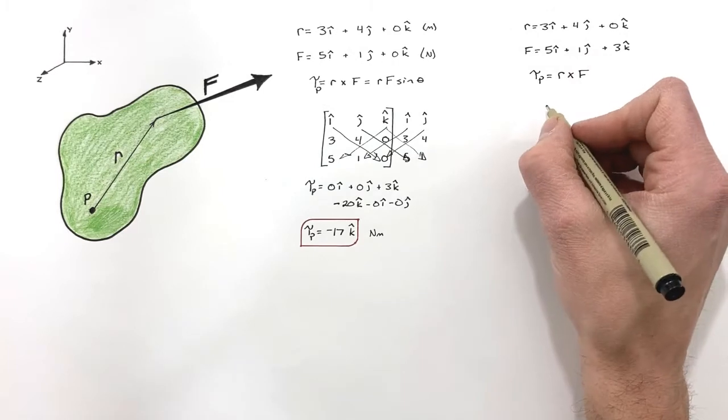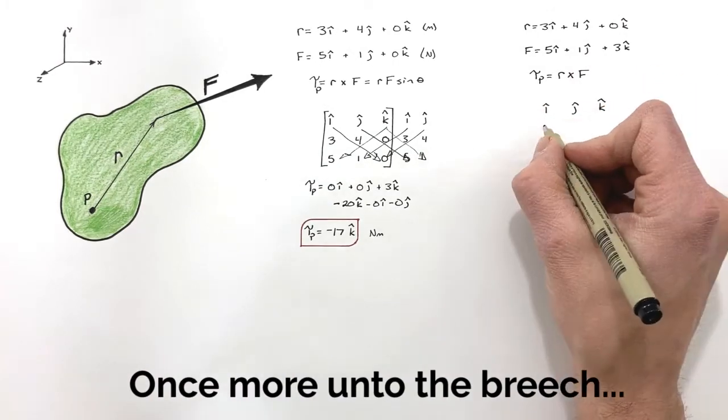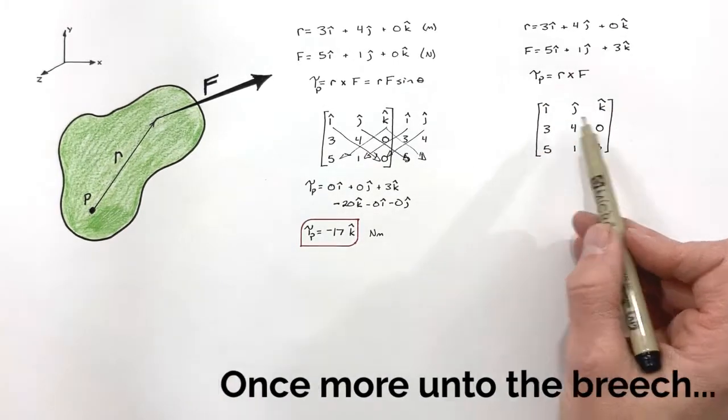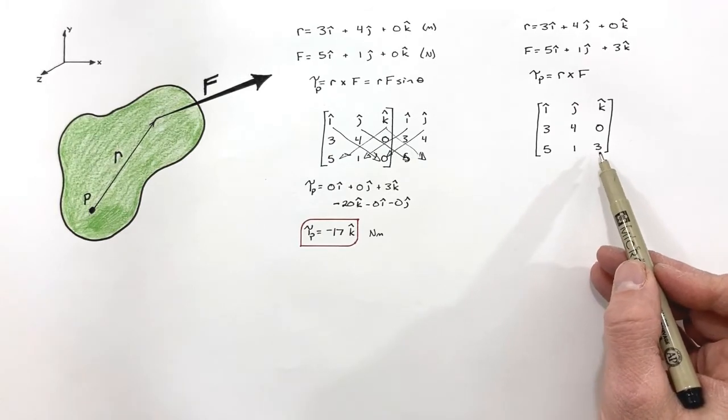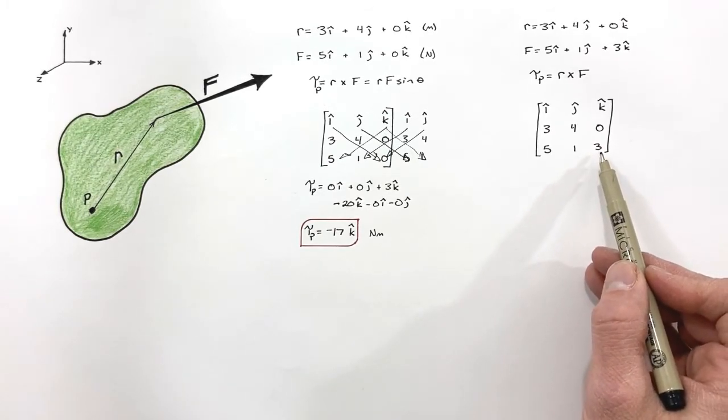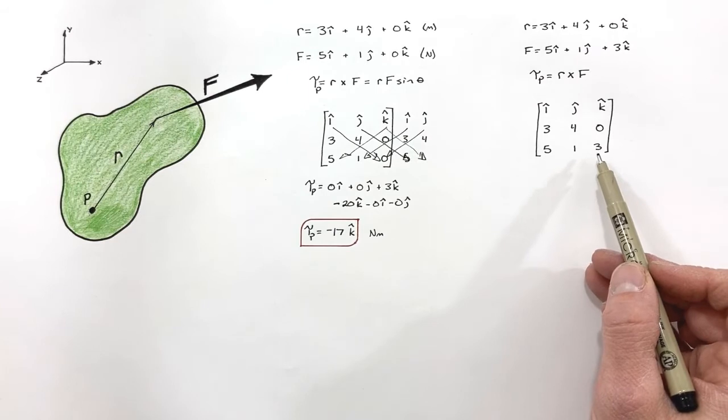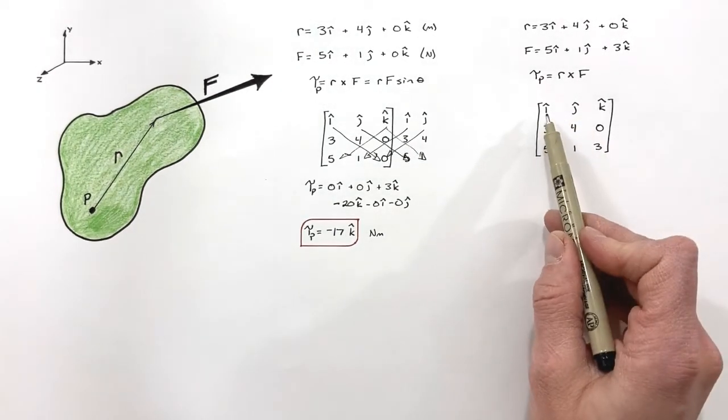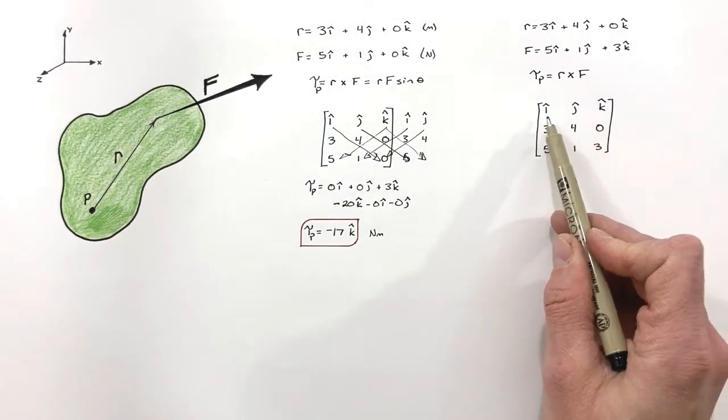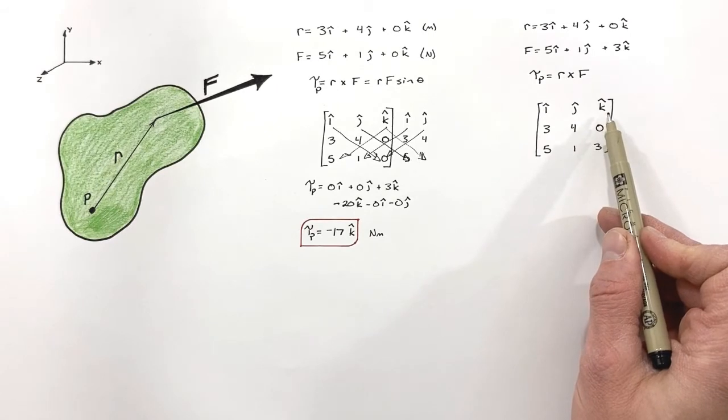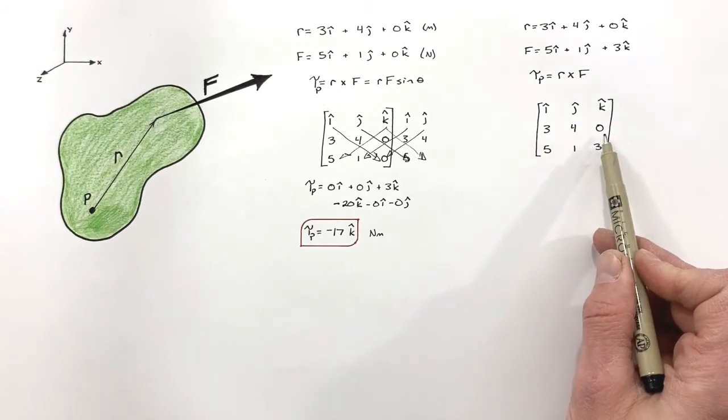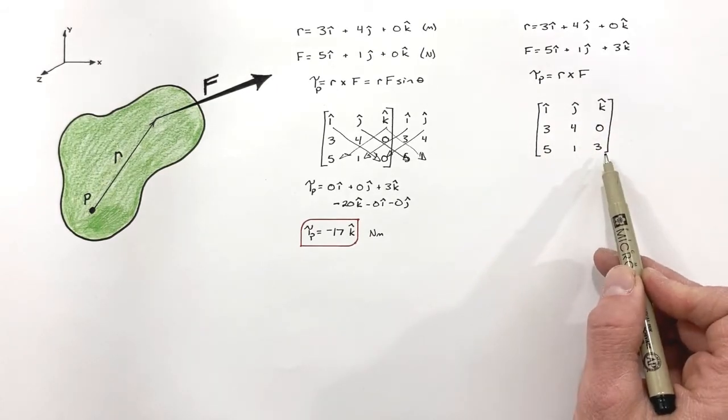So again, I'm going to set up a three by three matrix. So this time you'll see the component of the force vector in the k direction is not zero. So you can see again, first I set up the three different directions or axes in which we're working. I then laid out the components of the radius followed by the components of the force.